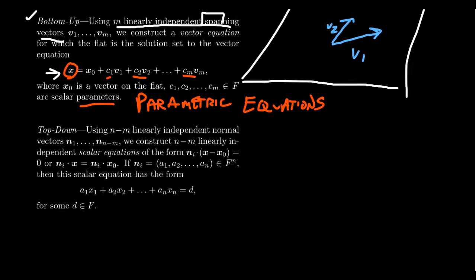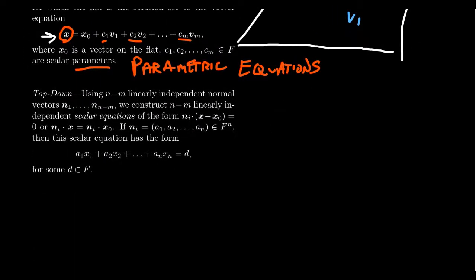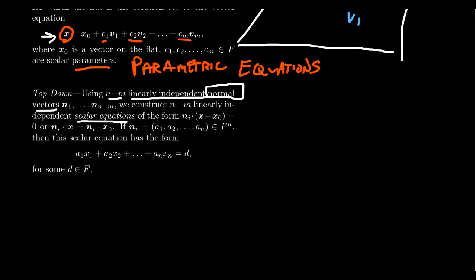The top-down approach, on the other hand, takes N minus M — that's the difference between the ambient dimension and the dimension of the flat — linearly independent normal vectors N1, N2, up to N_{N-M}. The critical thing here is that we are taking not spanners but normal vectors. We don't define a vector equation; we get a system of scalar equations.